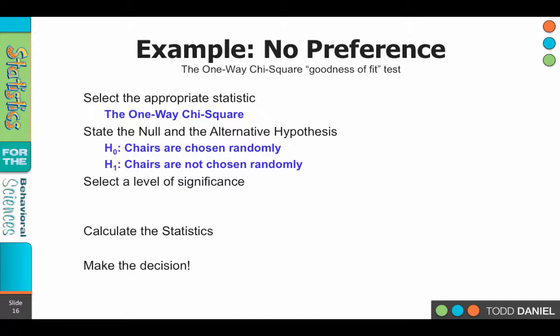Our level of significance. Well, how many degrees of freedom do we have? Well, how many chairs are there? Three chairs. That leaves us with two degrees of freedom.